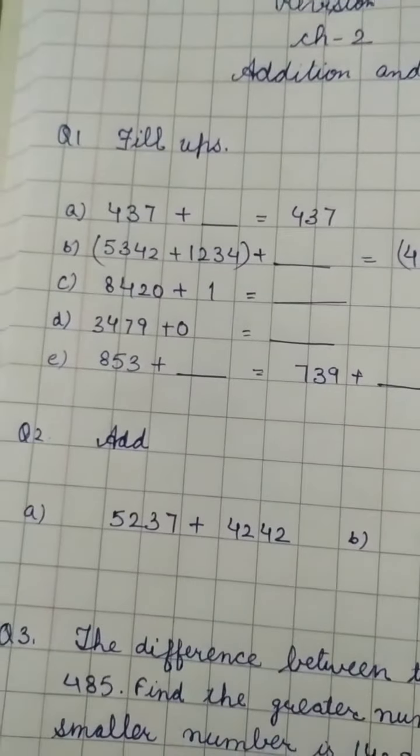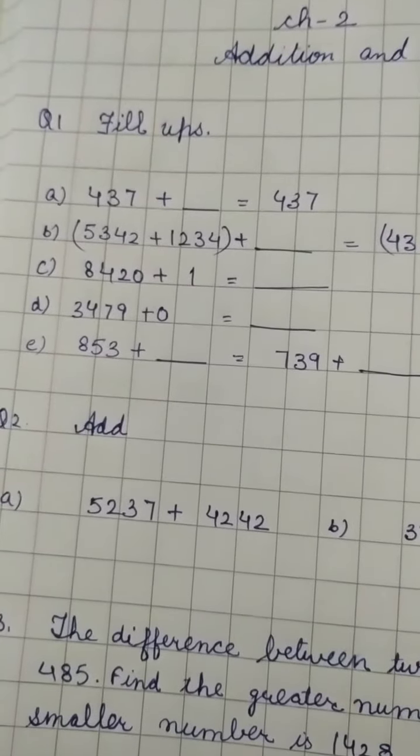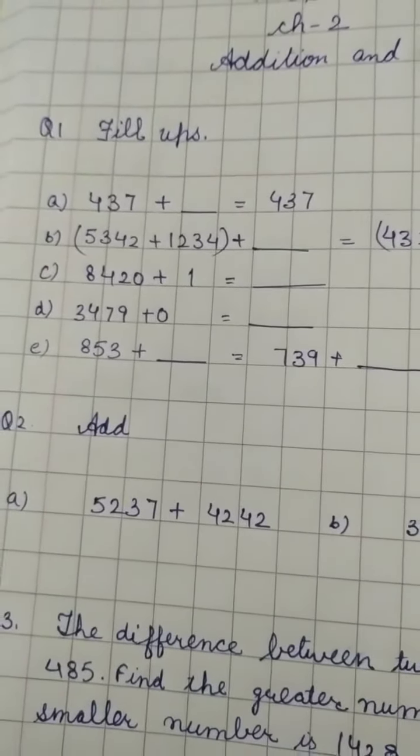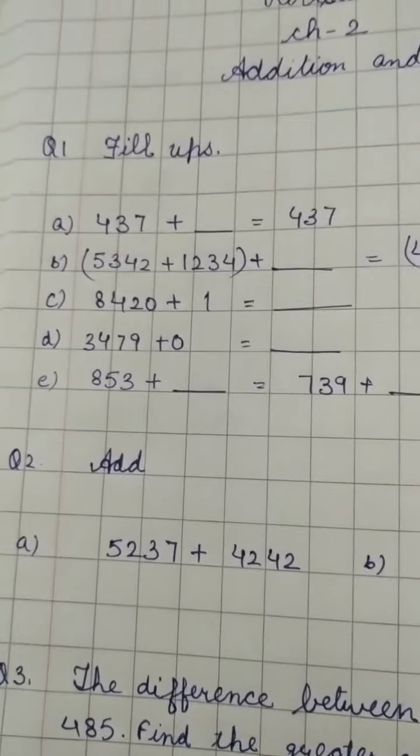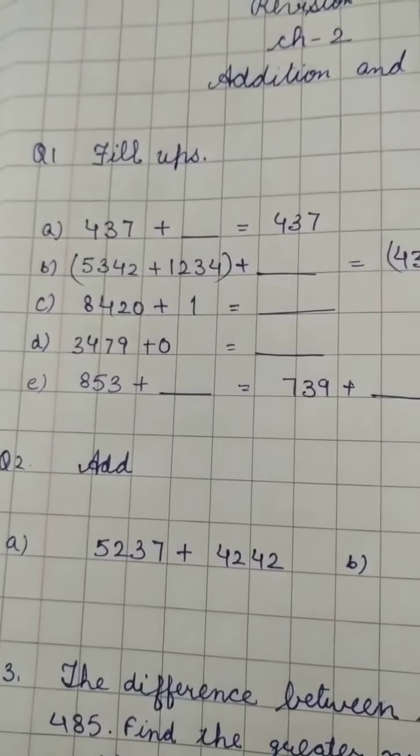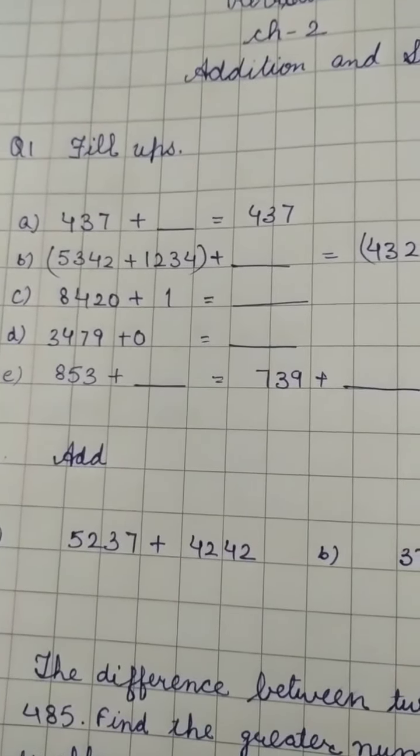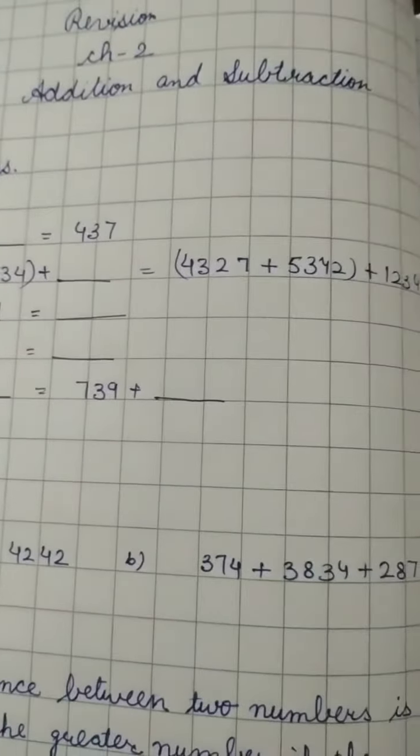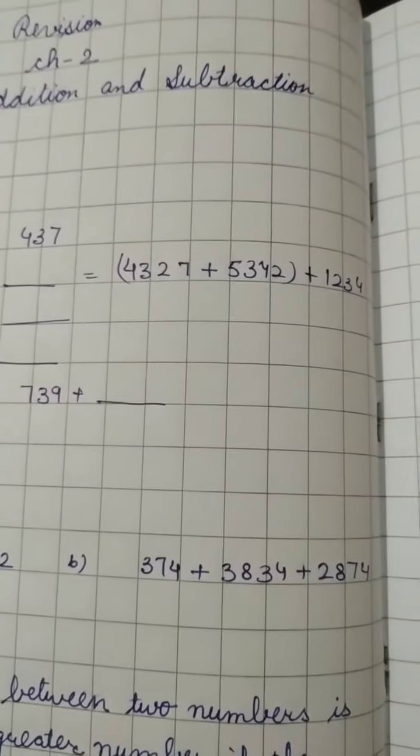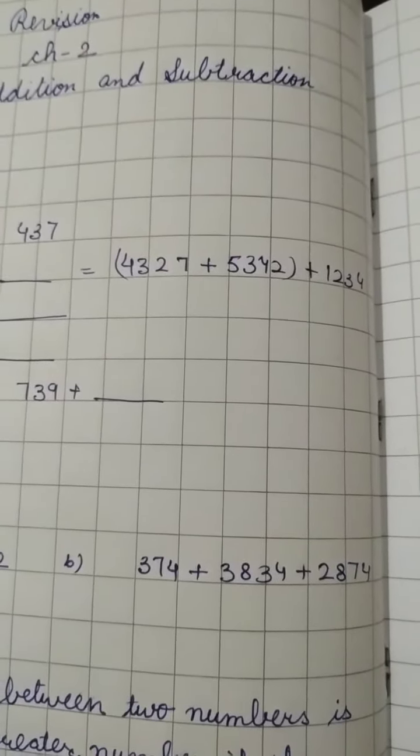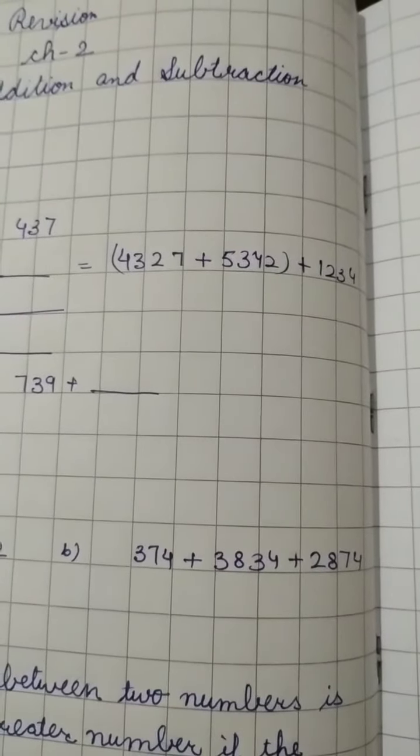Question number 1 is fill ups. Here A part is 437 plus what is equal to 437. B part is 5342 plus 1234 plus dash is equal to 4327 plus 5342 plus 1234.